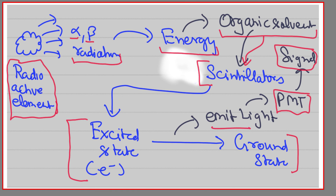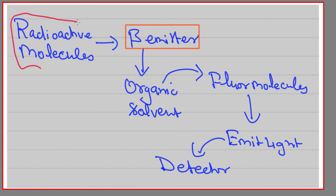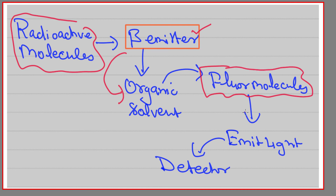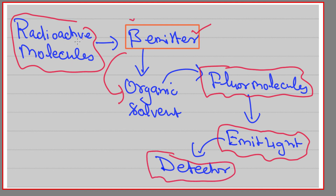In a simplified way: your radioactive molecule, which can be a weak beta emitter, emits radiation with some energy. This energy is captured by the organic solvent, which transfers it to the scintillators or fluor molecules. The fluor molecules enter an excited state and upon returning to the ground state emit light, which is detected by the detector. More radiation means more light emitted, so this way we can quantify how much radioactive element is present in a sample.